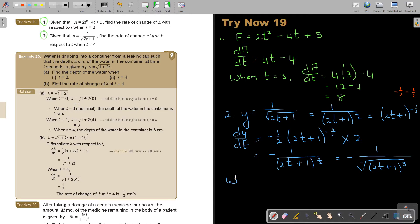Now, I can say, when T is 4, I'm going to say, dY over dT equals negative 1 over, and now I can substitute, in the place of T, I put 4, plus 1 to the power of 3.